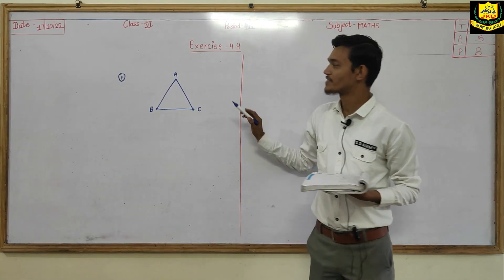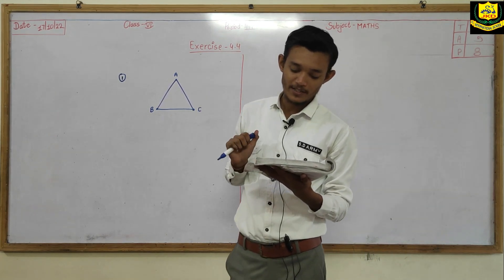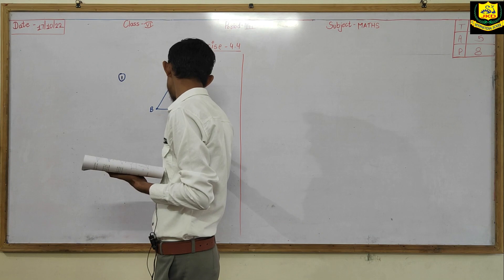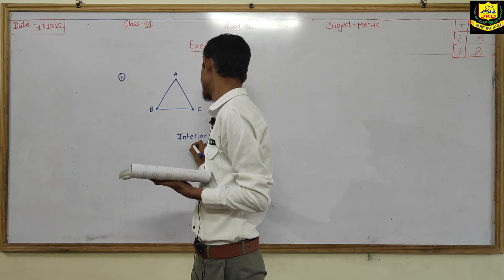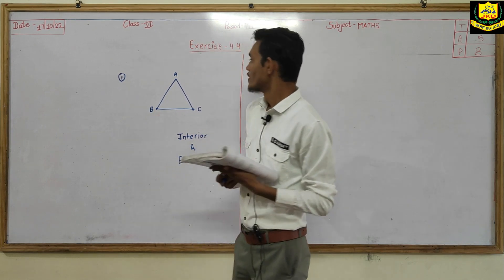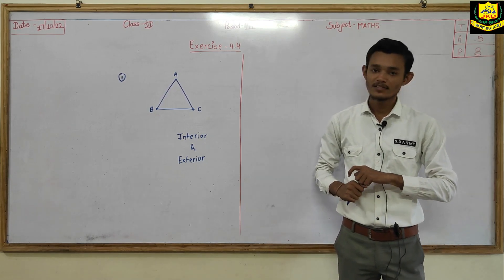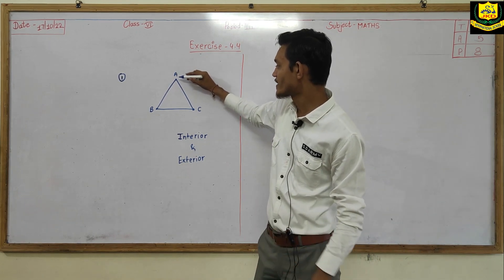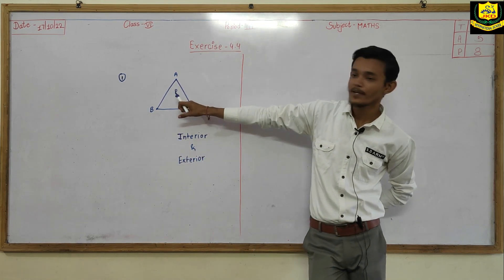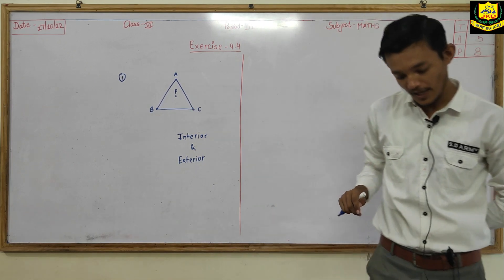So this is a triangle with 3 vertices A, B and C. Thereafter, mark a point P in its interior. There are two words: interior and exterior. In the first part we have to mark a point P in the interior of the triangle. Interior means inside the triangle. The triangle is ABC. Let us plot point P. So now point P is in the interior of triangle ABC.